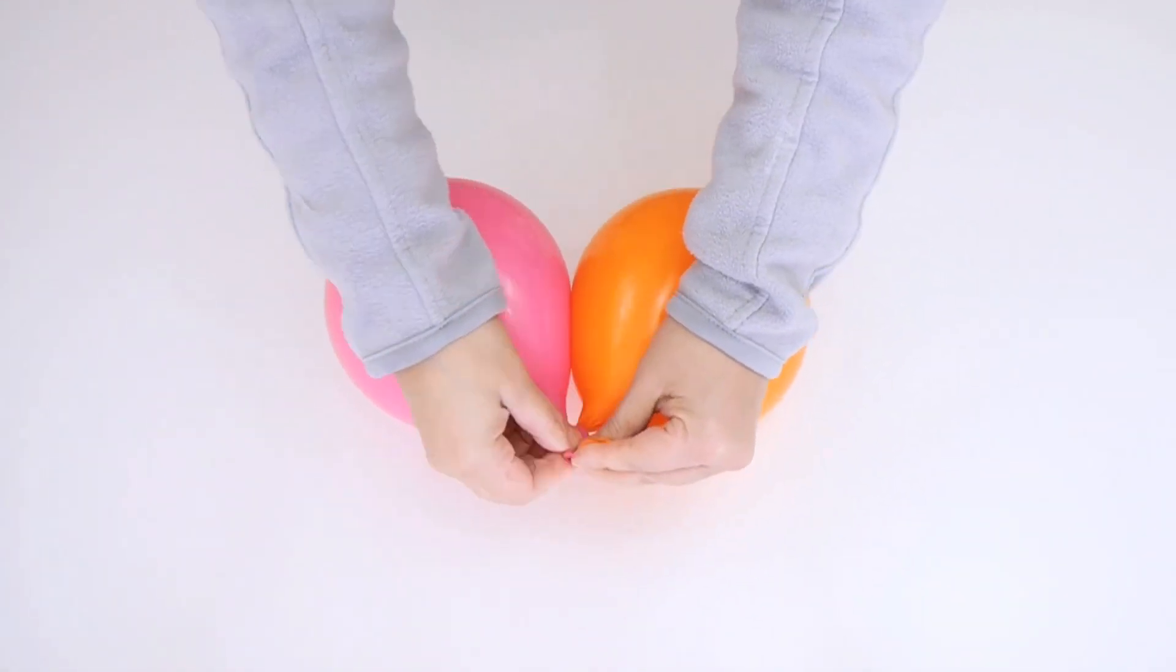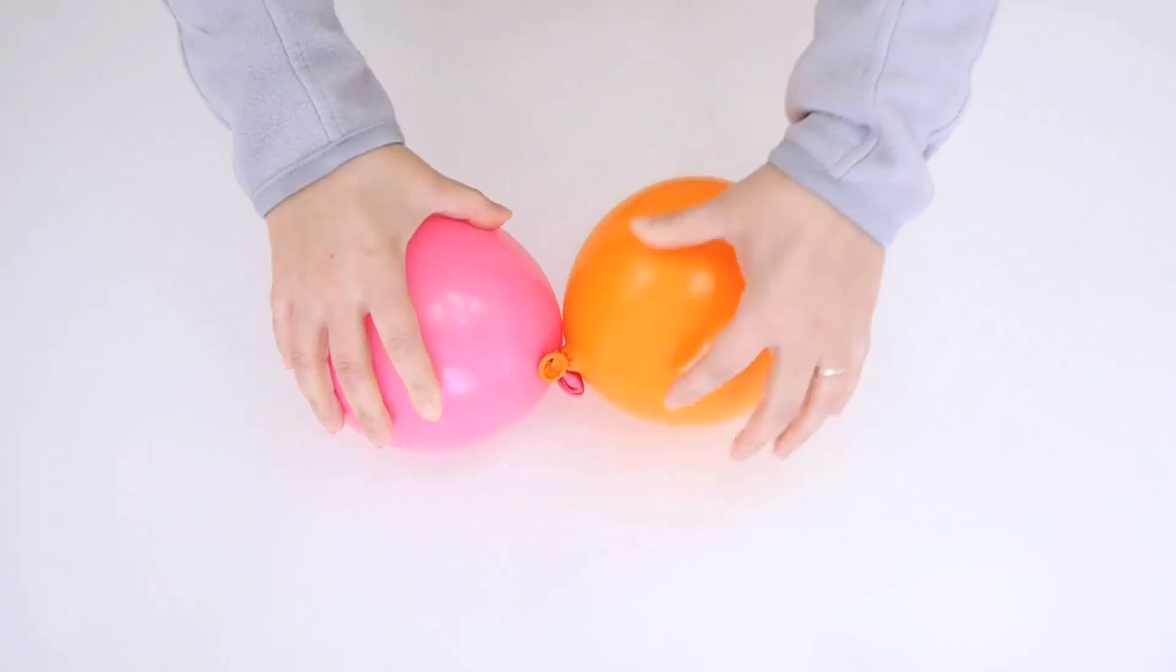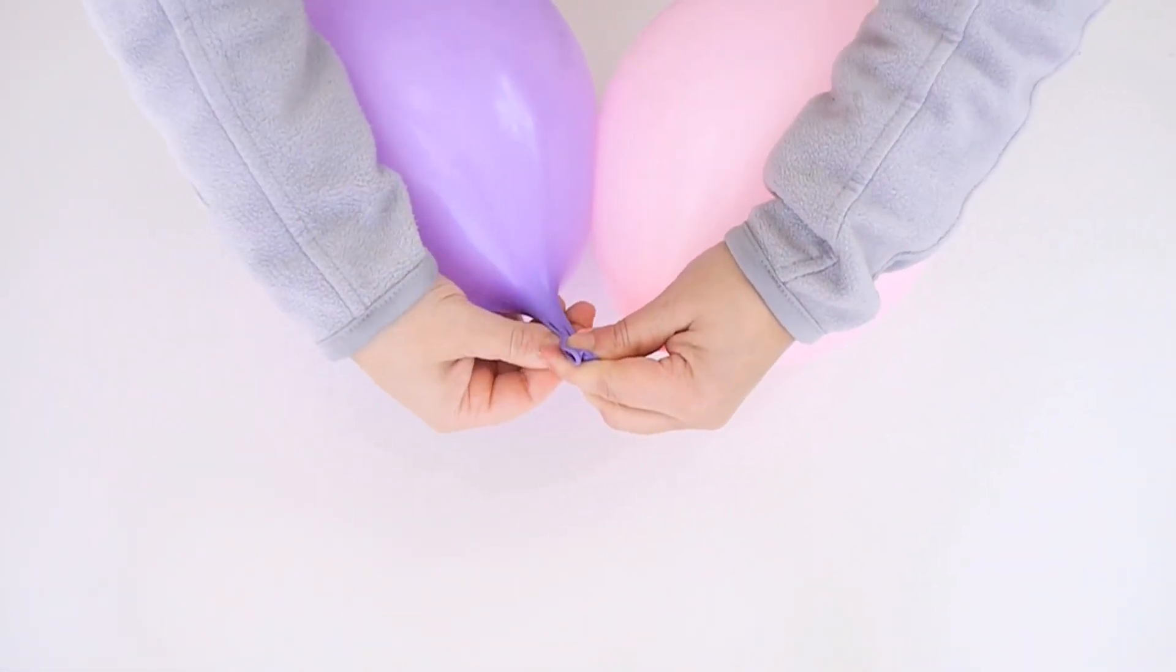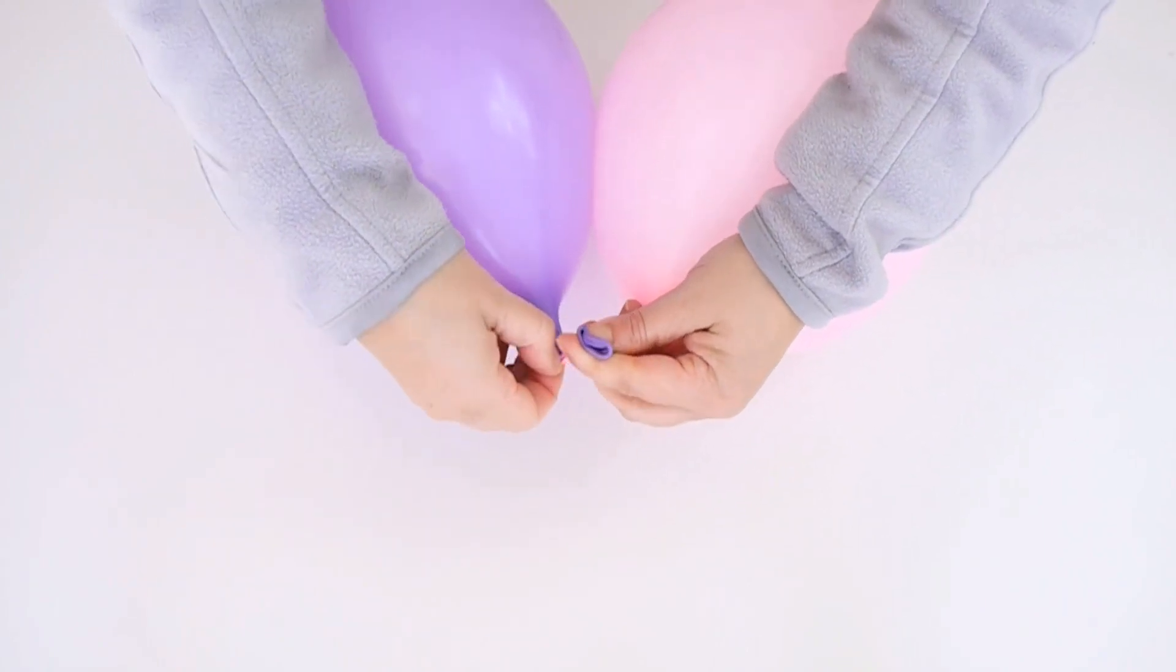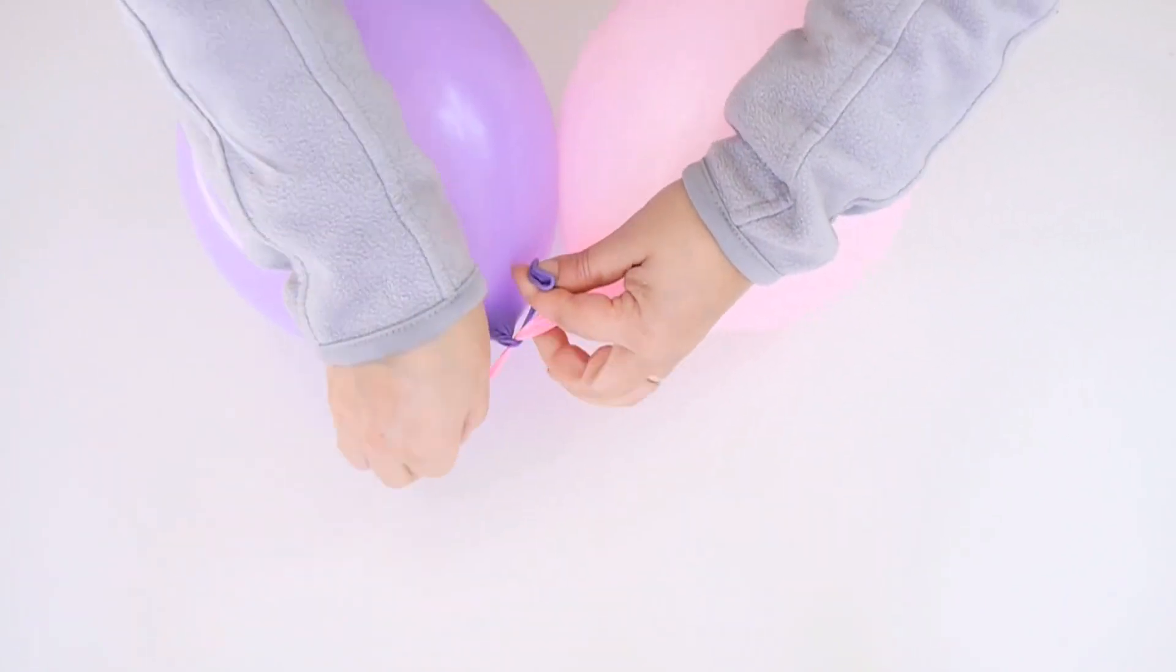So here I'm tying two smaller balloons as you can see. Once you're happy with the size of balloons you have, the color scheme you're going for, and all your balloons are inflated and tied up, we can start building our garland.